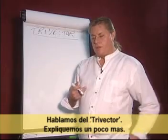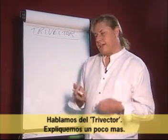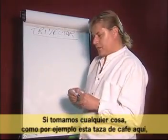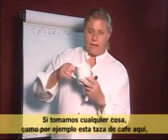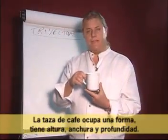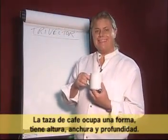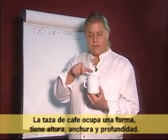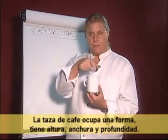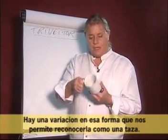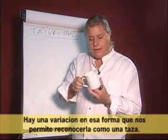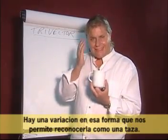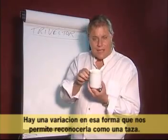We talk a lot about the tri-vector — let's explain that a little bit more. If we take any item, such as the coffee cup here, the coffee cup occupies a shape. It has a height, a width, and a breadth. It has a variation in that shape that allows us to recognize it as a cup.